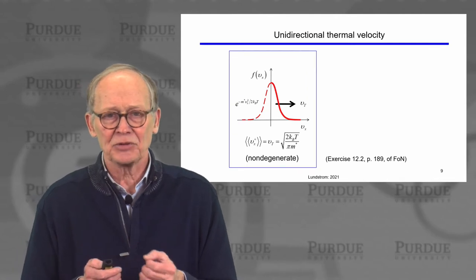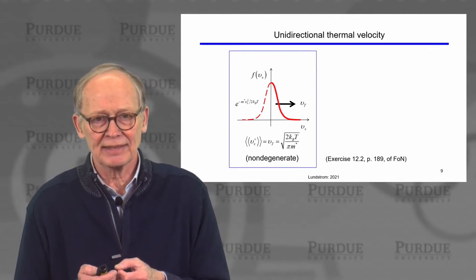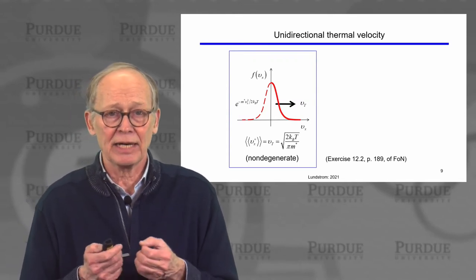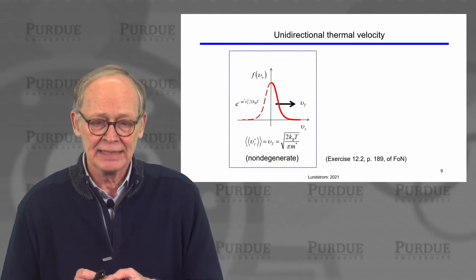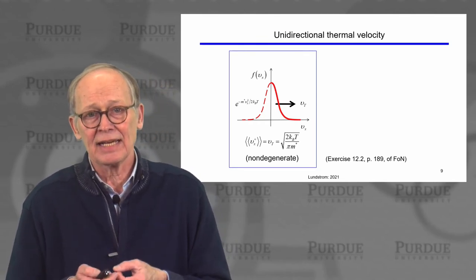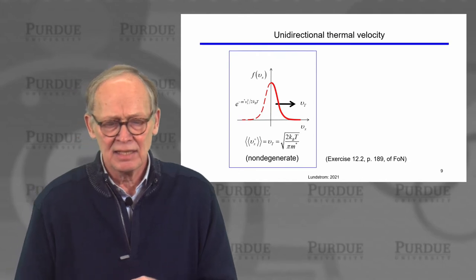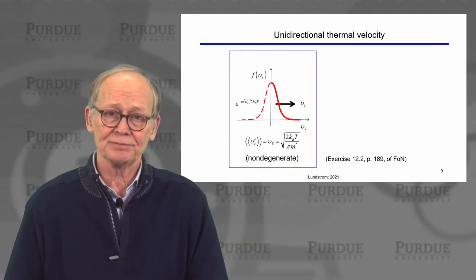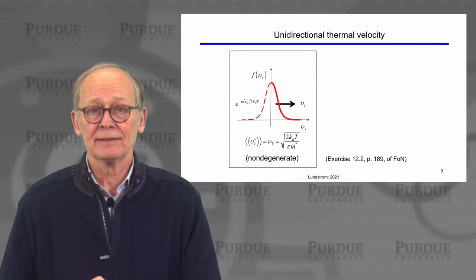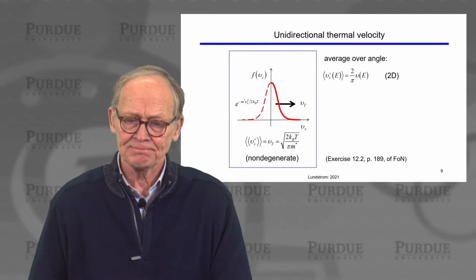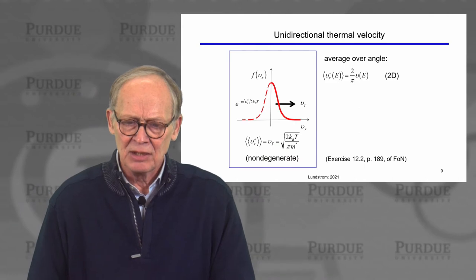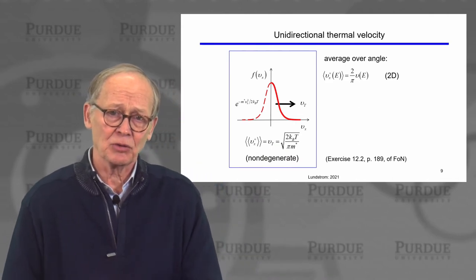The unidirectional thermal velocity goes as the square root of temperature divided by effective mass. This random thermal motion comes about because electrons are being bounced around at random by their interactions with lattice vibrations — that's where the temperature comes in. The higher the temperature, the more the lattice is vibrating and the faster the velocity. The lighter the electrons, the faster they go, because one-half mv squared equals the energy the electrons have.